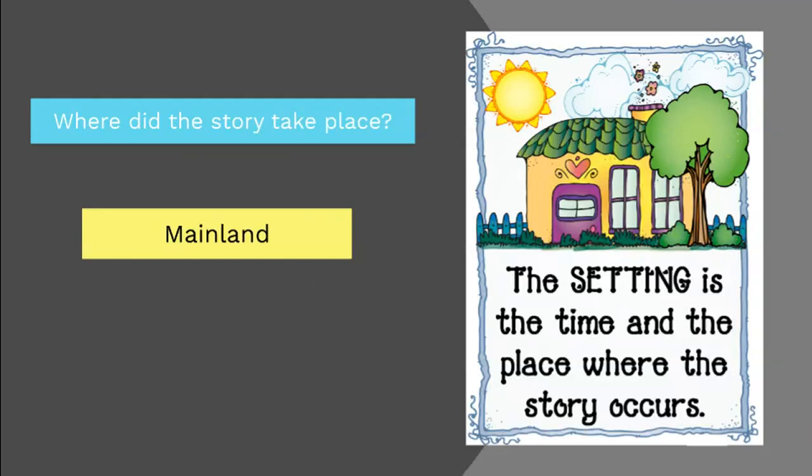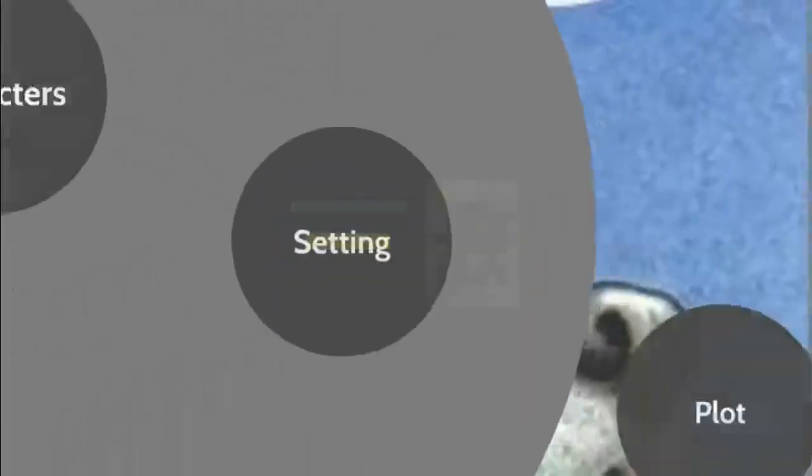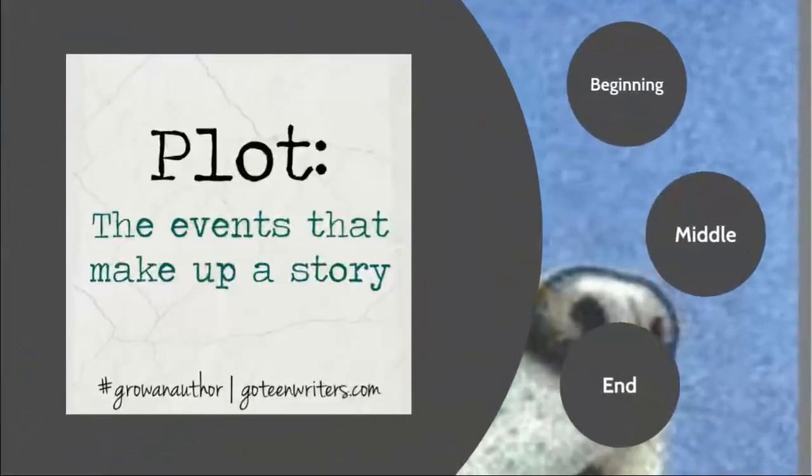The events also happened over a year because you can tell that we read events that happened in spring, summer, and autumn, as well as winter. So moving on to the plot. The plot is the events that make up a story. So of course we need to focus on the major events that happened in the story.